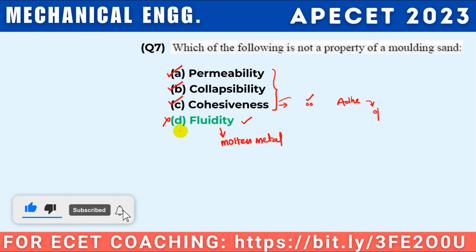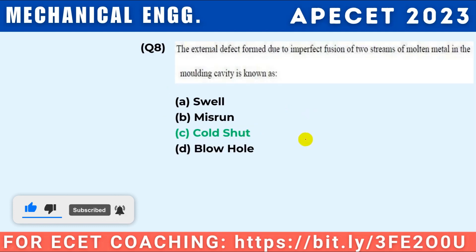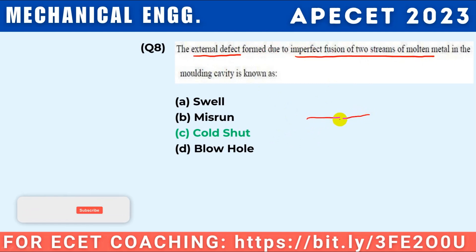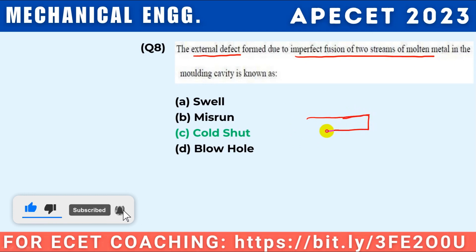The external defect formed due to imperfect fusion of two streams of molten metal in the mould cavity is known as a cold shut. So your answer is cold shut.